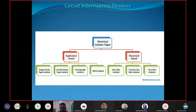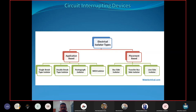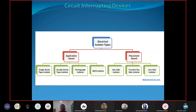An electrical isolator is used in switchyards and substations. The basic function of the isolator is to isolate the system or the line. The isolator is installed with a circuit breaker and is one type of air brake switch. It operates on no-load condition only — we cannot operate the isolator under on-load conditions.